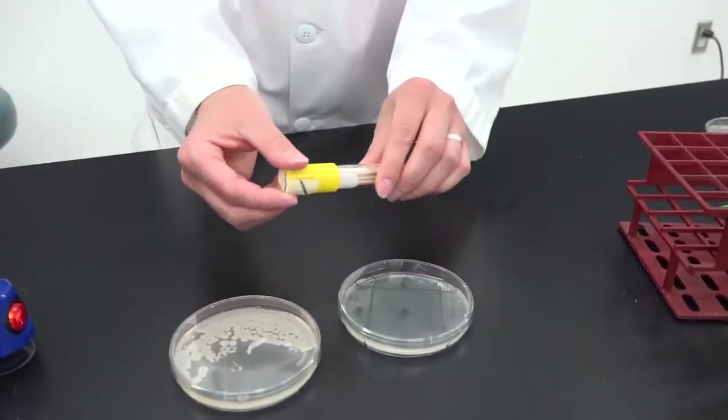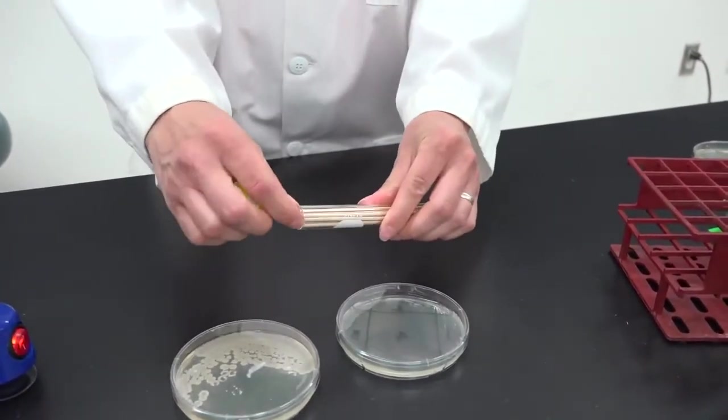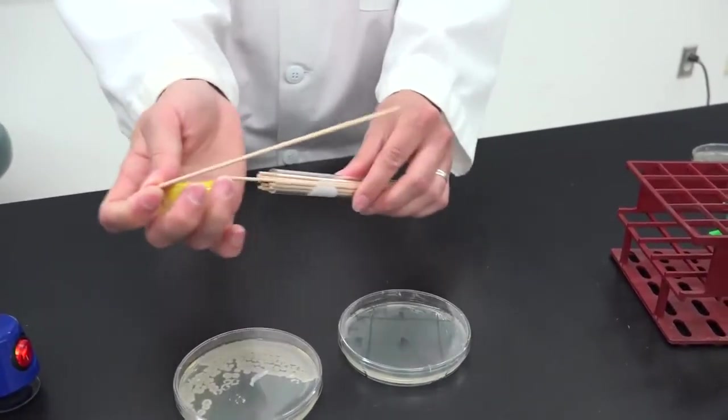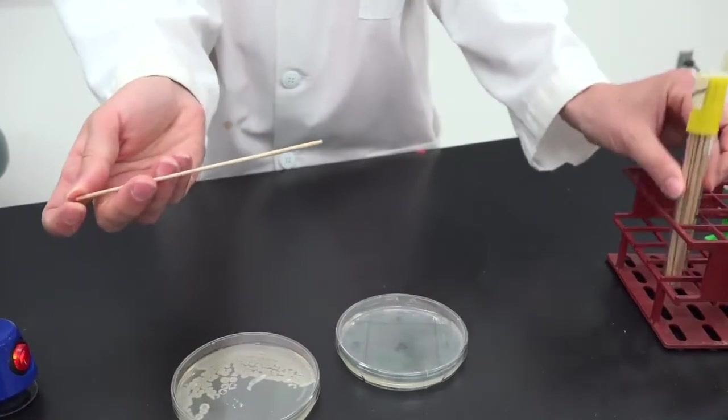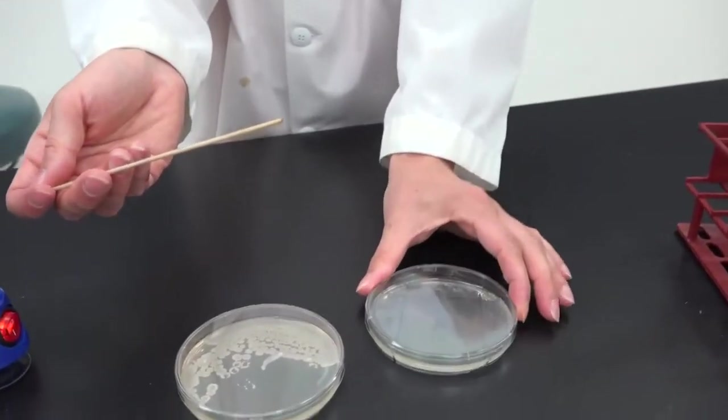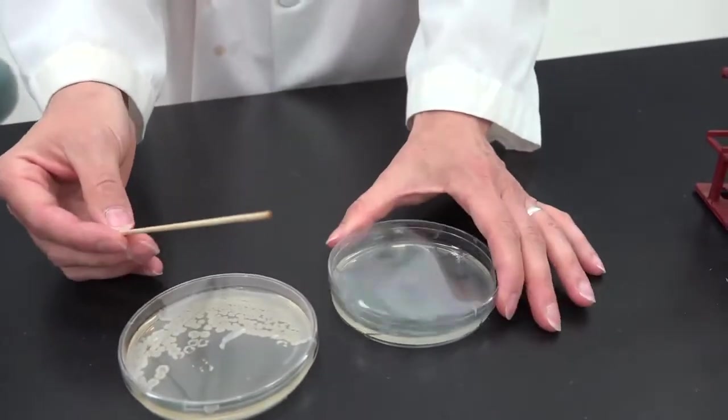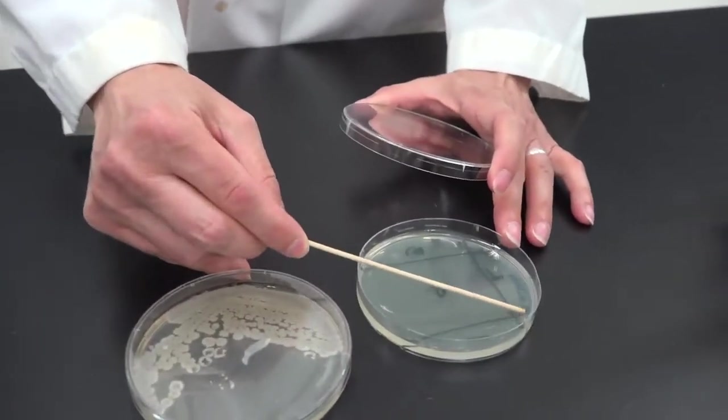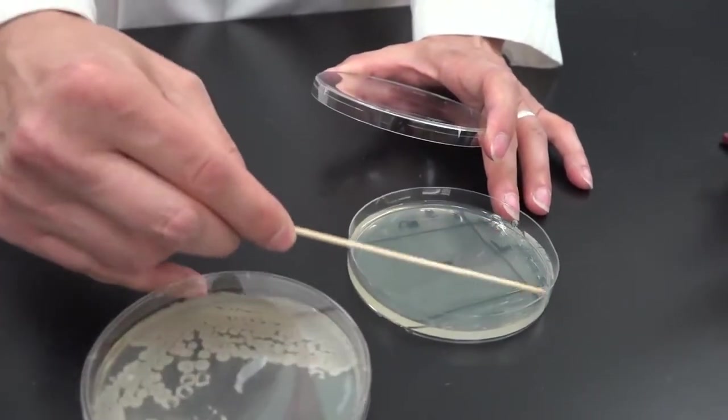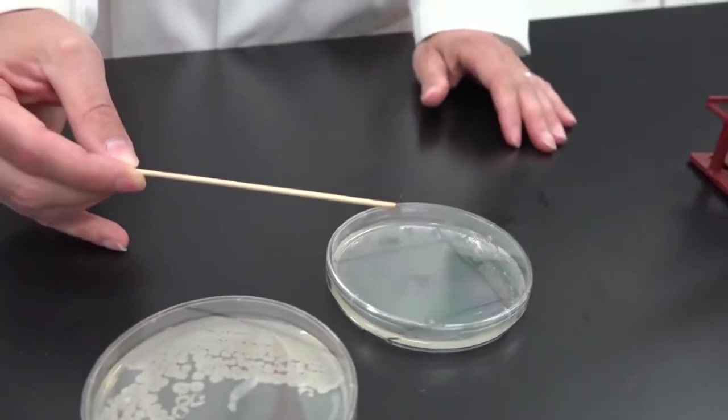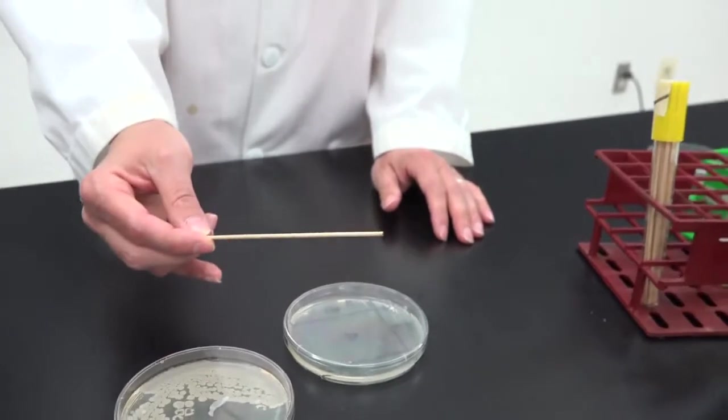Get a new sterile stick. If the sticks are hard to get out of the tube, just give it a little tap to loosen one up. Without touching any new bacteria, turn the plate 90 degrees and take the stick, touch the bacteria at the corner of quadrant one and spread them evenly across quadrant two. Then discard that stick.